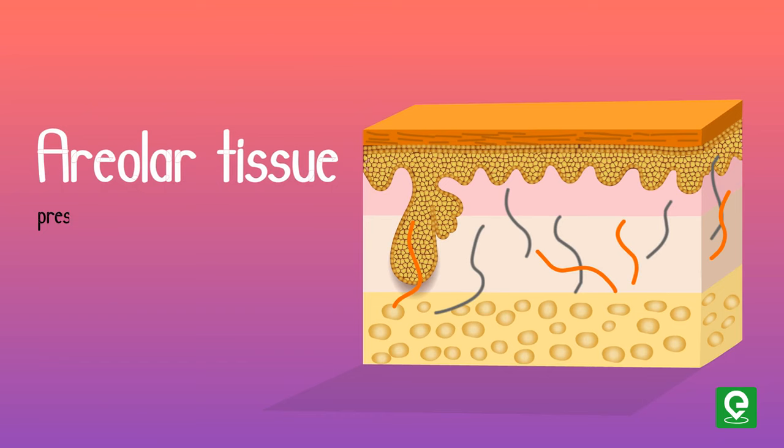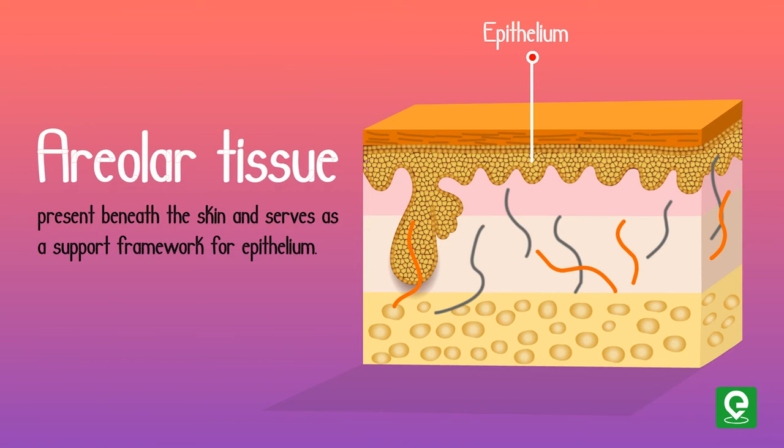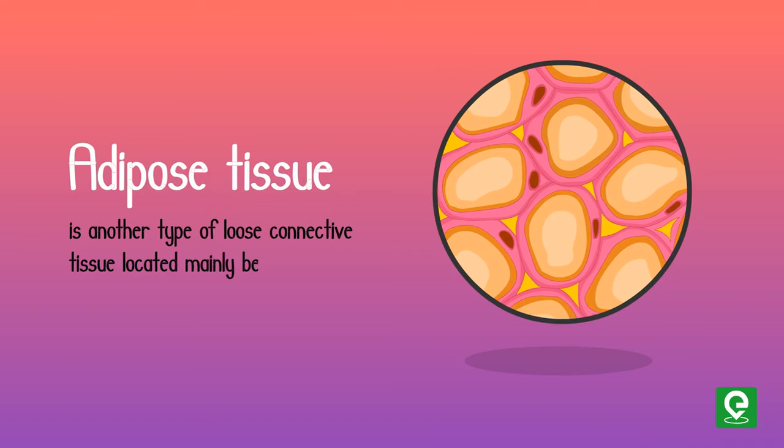Areolar tissue is present beneath the skin and serves as a support framework for epithelium. It contains fibroblasts, macrophages, and mast cells. Adipose tissue is another type of loose connective tissue, located mainly beneath the skin.